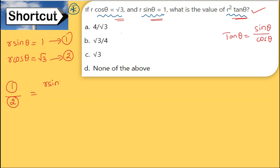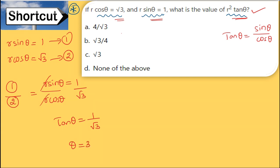Dividing: r sinθ / r cosθ = 1/√3. The r cancels, giving tan θ = 1/√3, so θ = 30°.